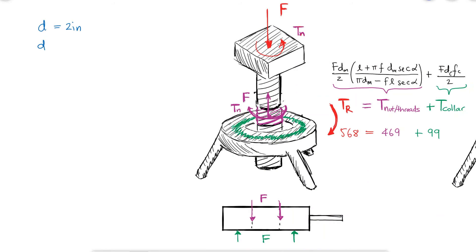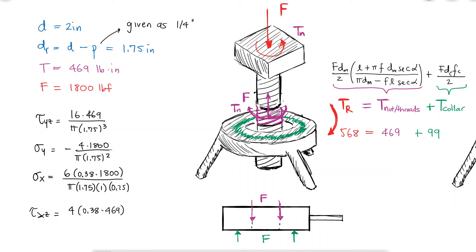With the given nominal diameter and therefore the root diameter, together with the given load and the torque that actually affects the threads, we can calculate the stresses that affect the threads at the critical location, and these allow us to calculate the von Mises stress as 5.59 KSI.